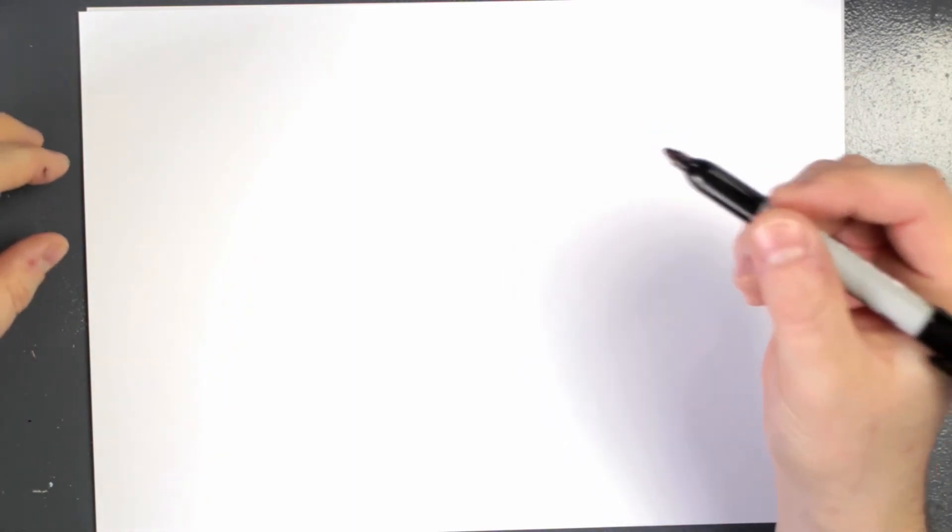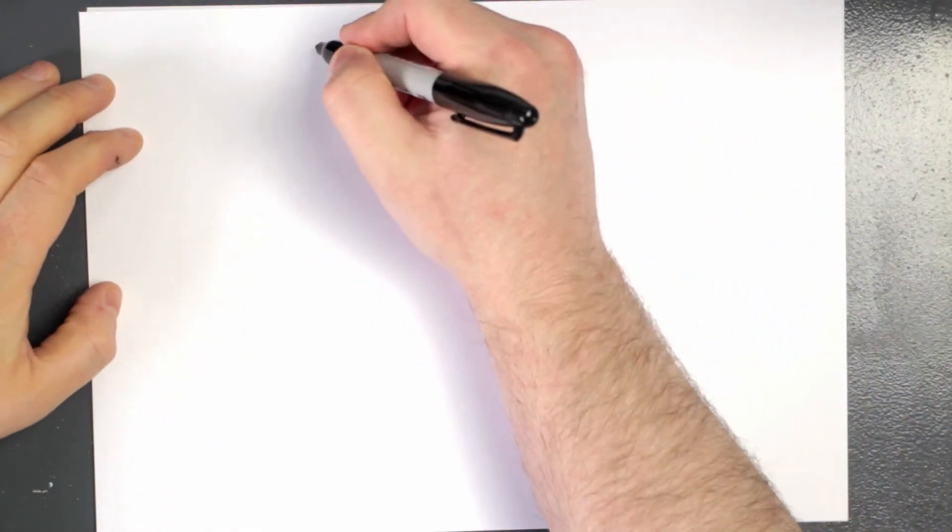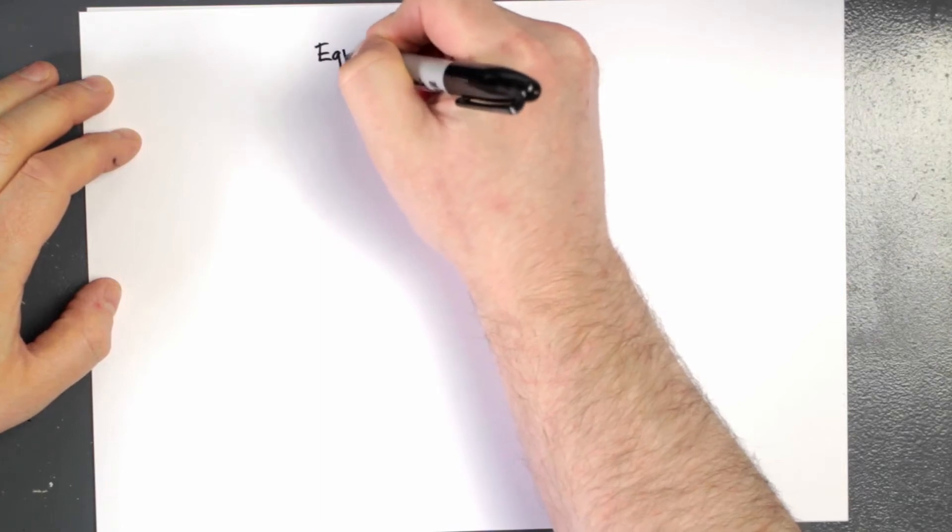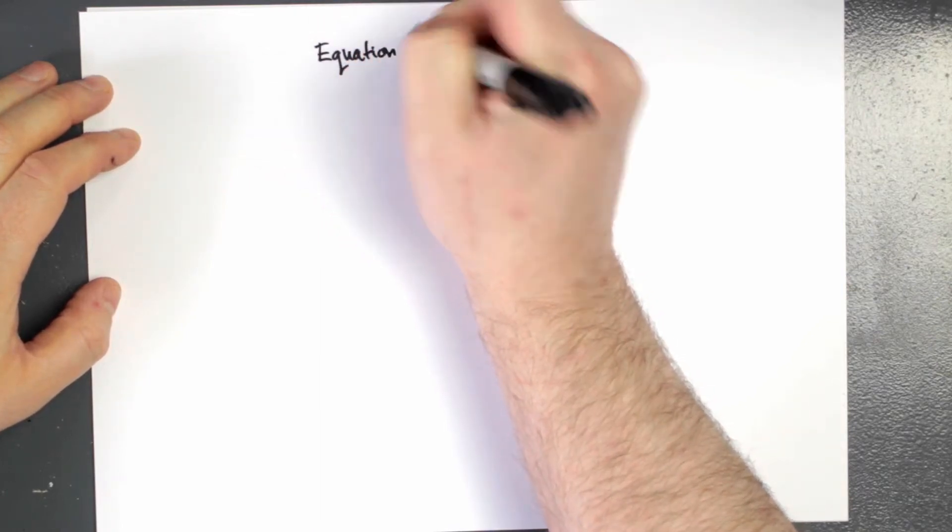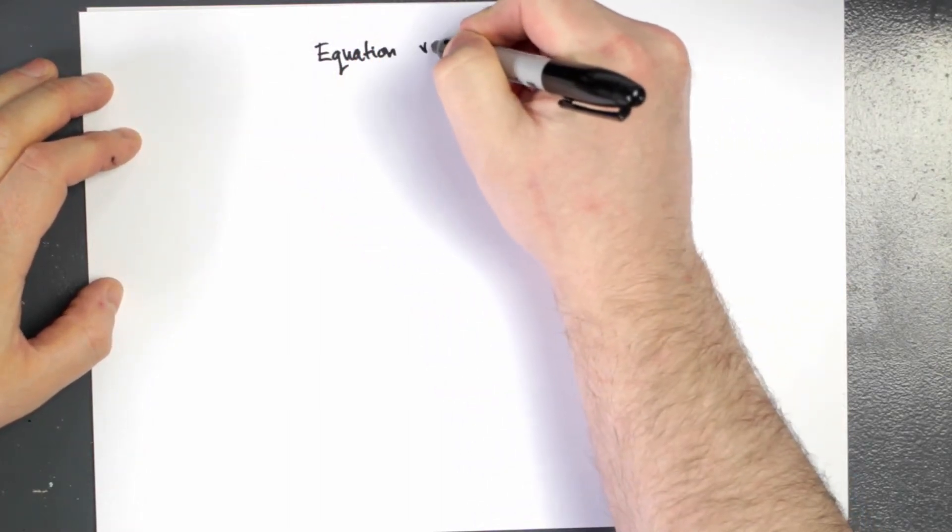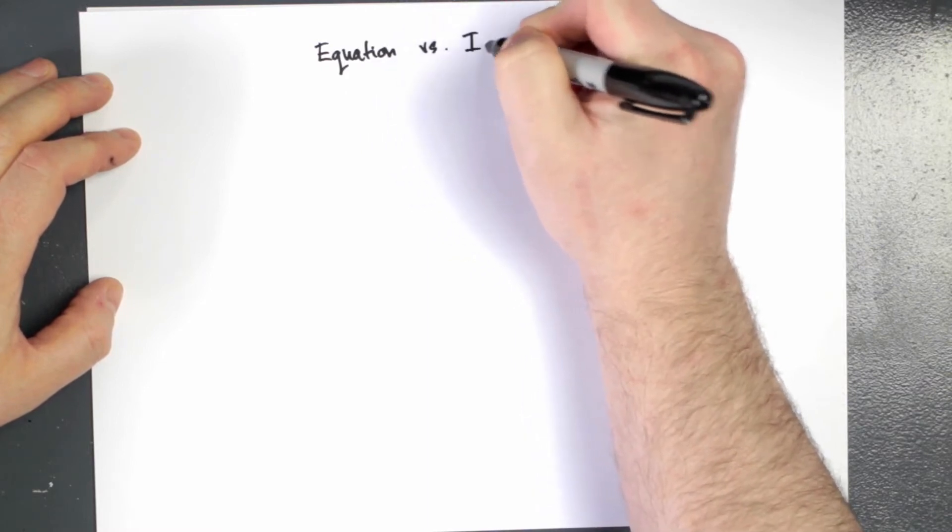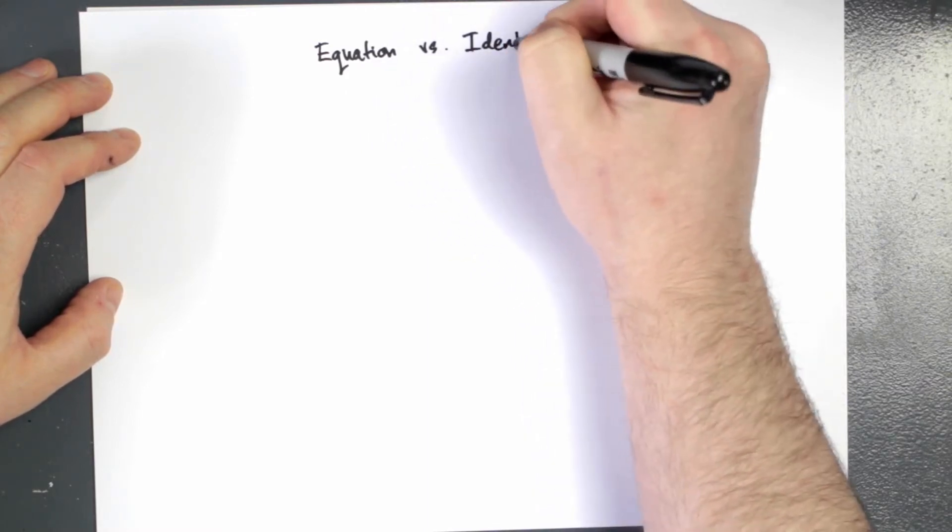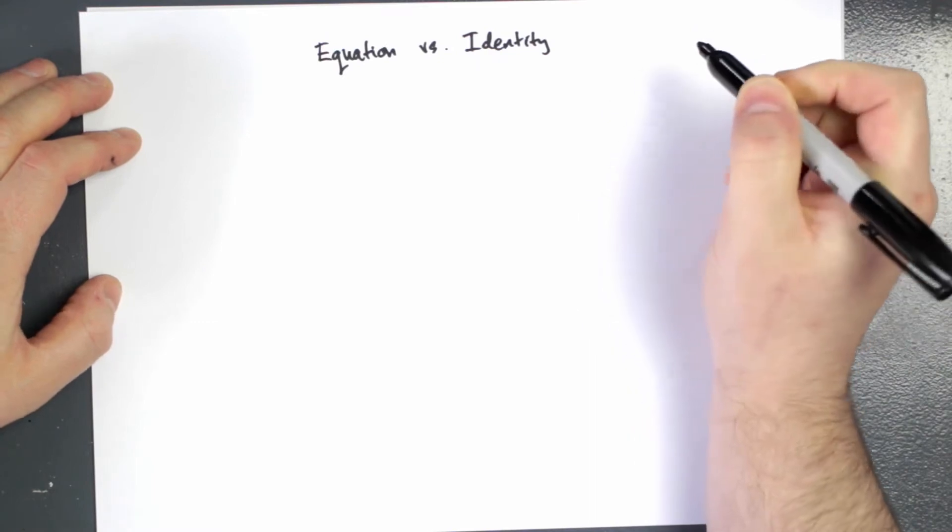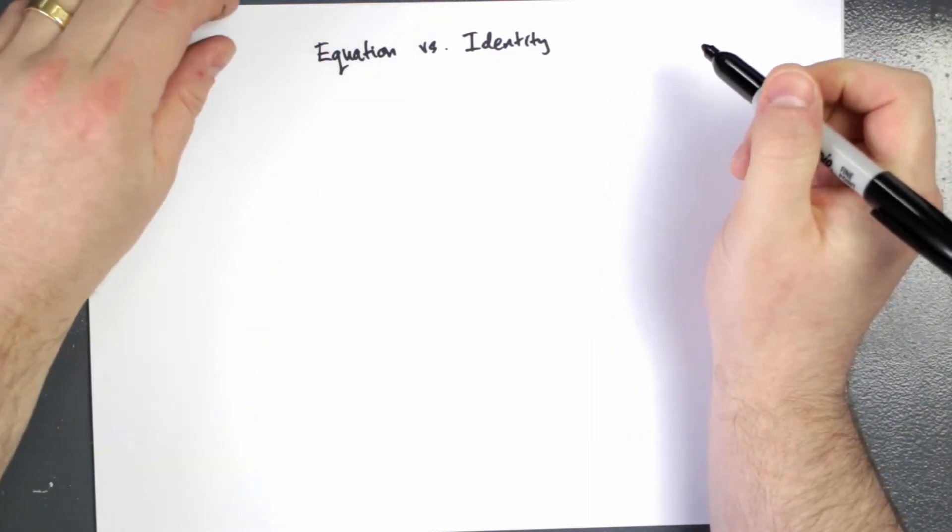Okay, so before we start analyzing this tax problem, I'd just like to go over a basic mathematical idea because it's going to be very important for what we do next. This is on the difference between an equation, which I'm sure we've all heard of, versus what's called an identity.